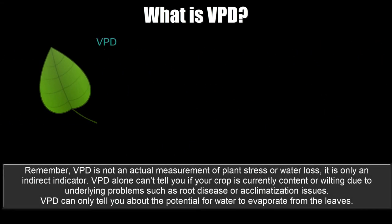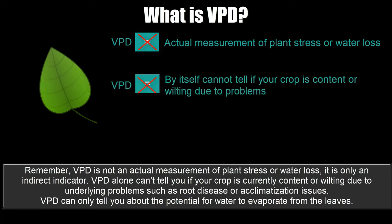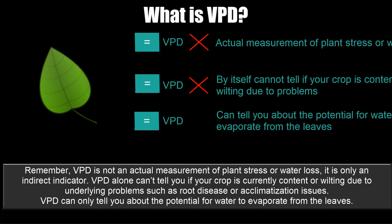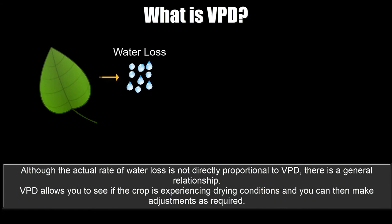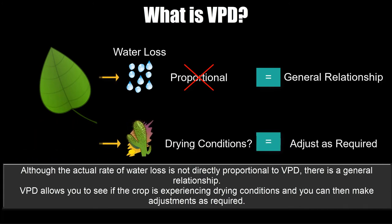Remember, VPD is not an actual measurement of plant stress or water loss — it is only an indirect indicator. VPD alone can't tell you if your crop is currently content or wilting due to underlying problems such as root disease or acclimatization issues. VPD can only tell you about the potential for water to evaporate from the leaves. Although the actual rate of water loss is not directly proportional to VPD, there is a general relationship. VPD allows you to see if the crop is experiencing drying conditions so you can make adjustments as required.